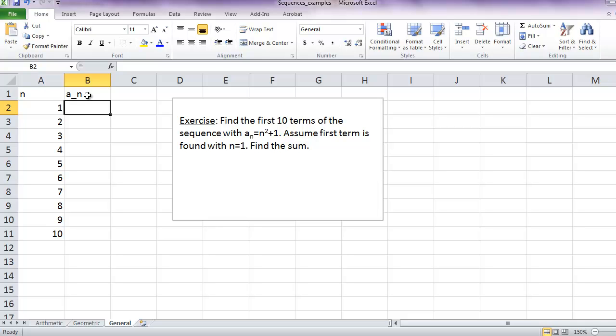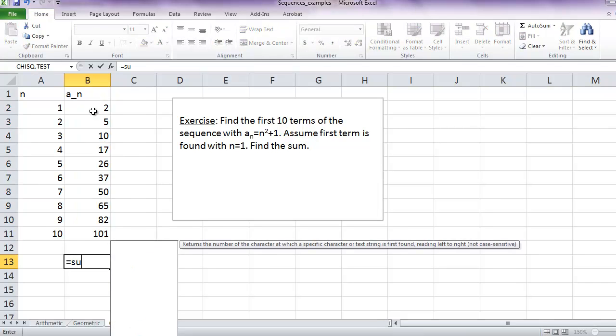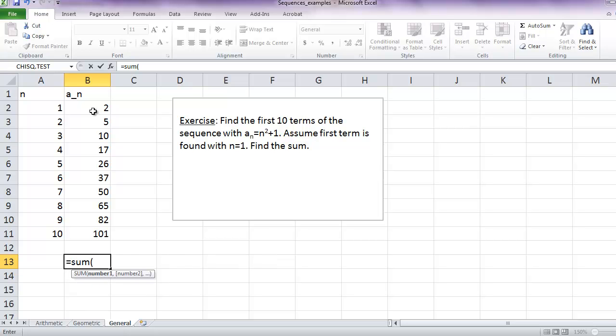And for the formula of the terms, we're looking at n squared plus 1. So this equals n squared plus 1. Let's fill down the series. And now, to find the sum, we just type equals sum, sum over the cells, and that's our answer. I'll see you next time.